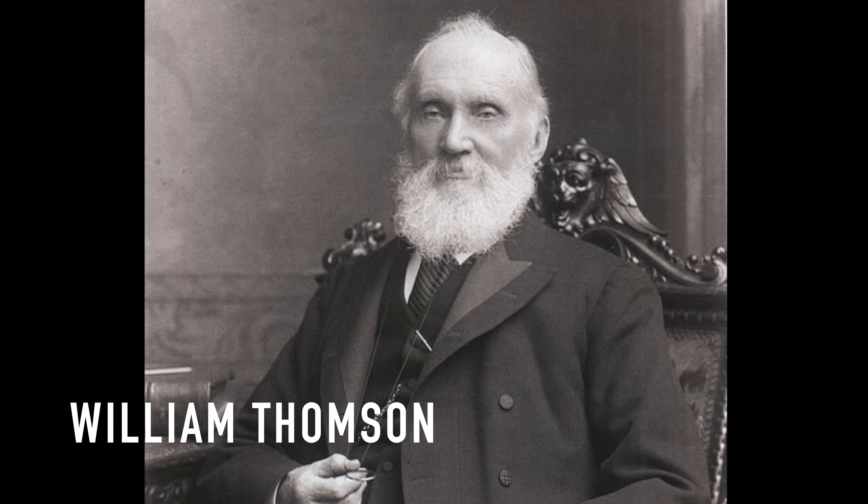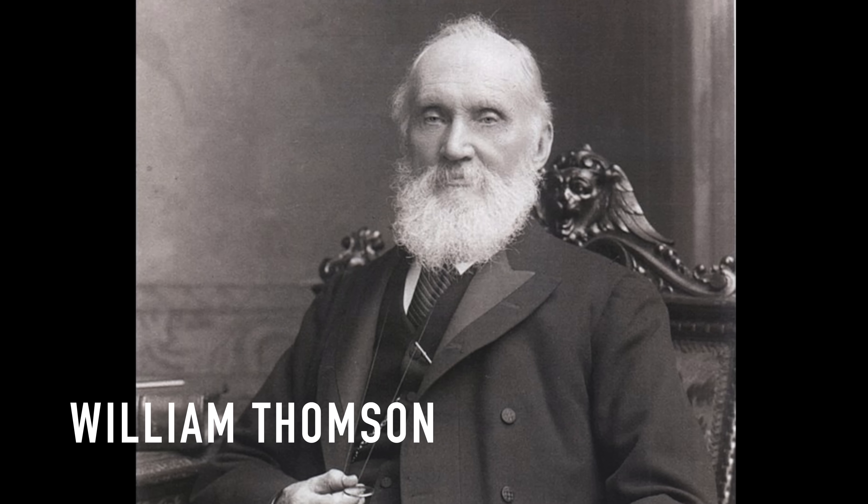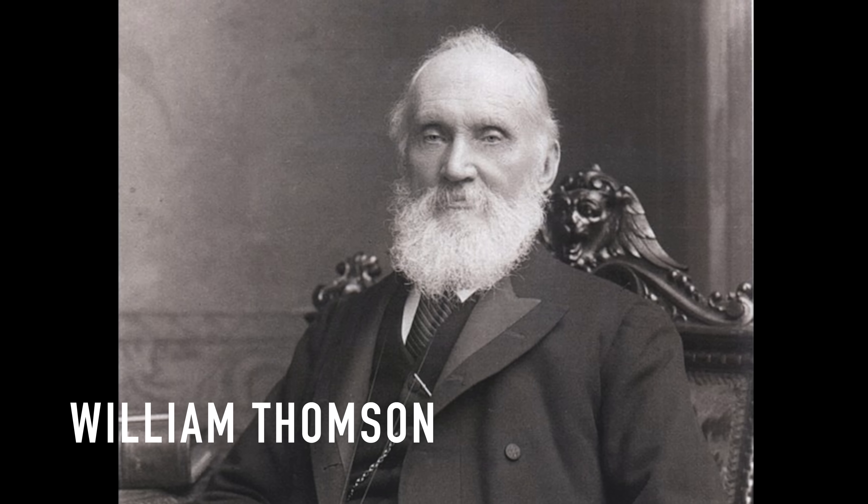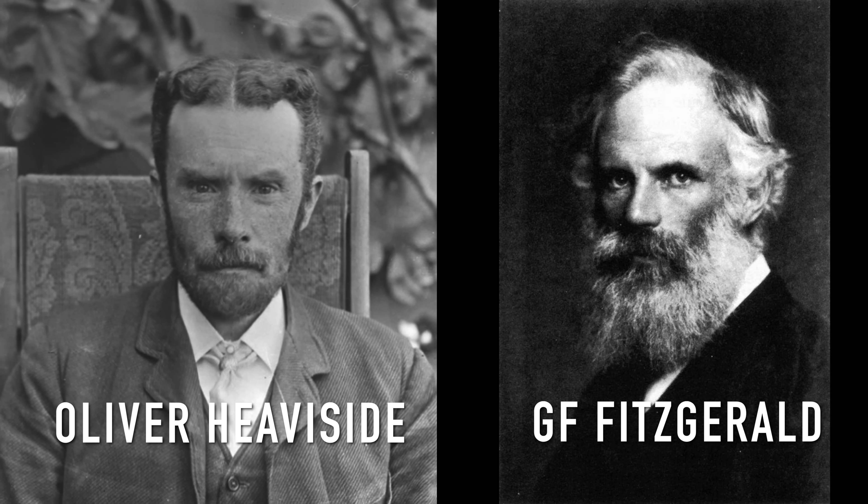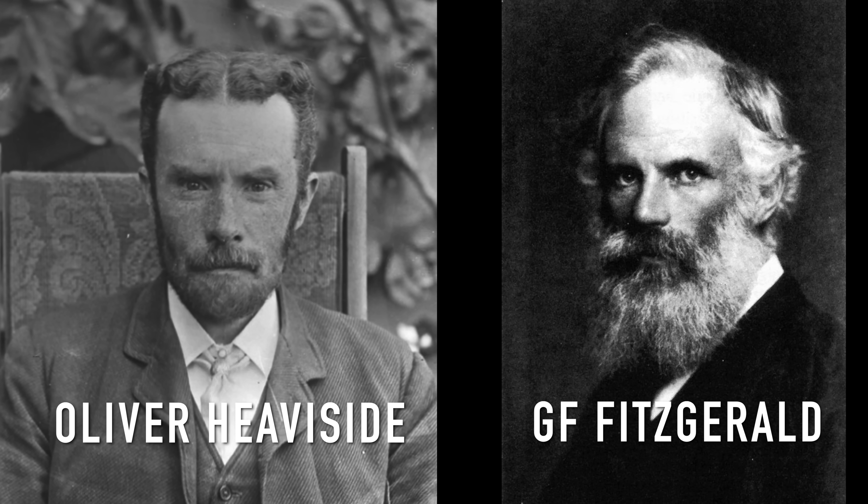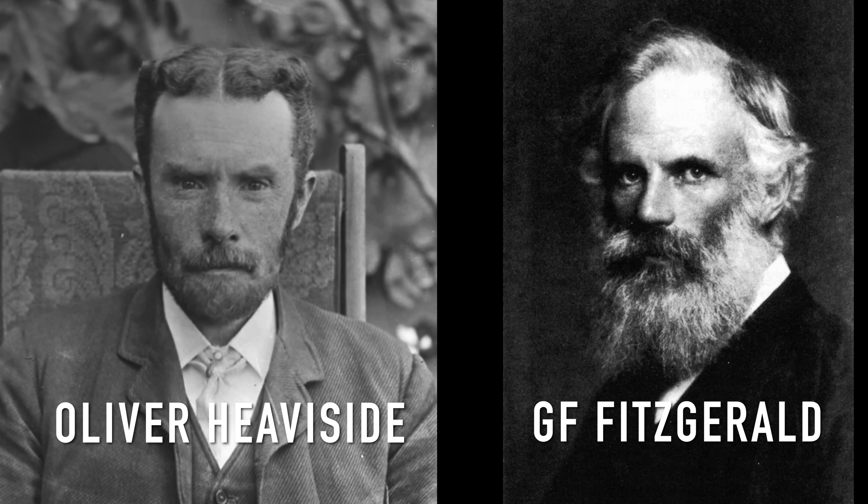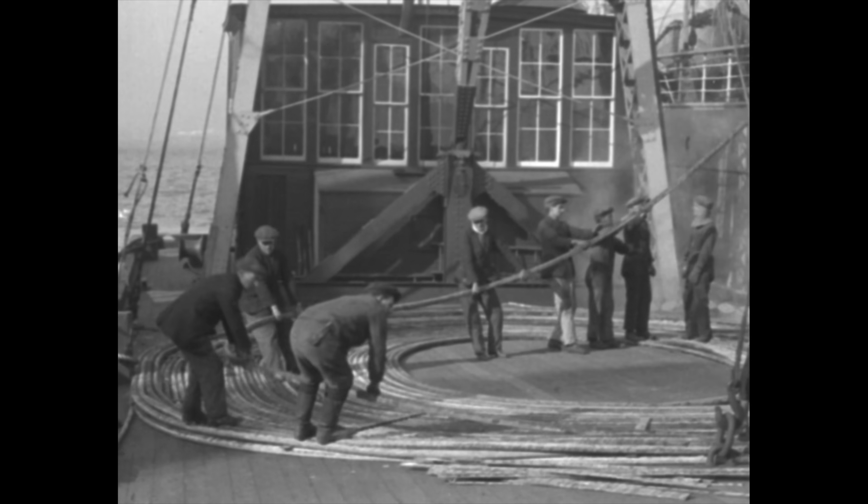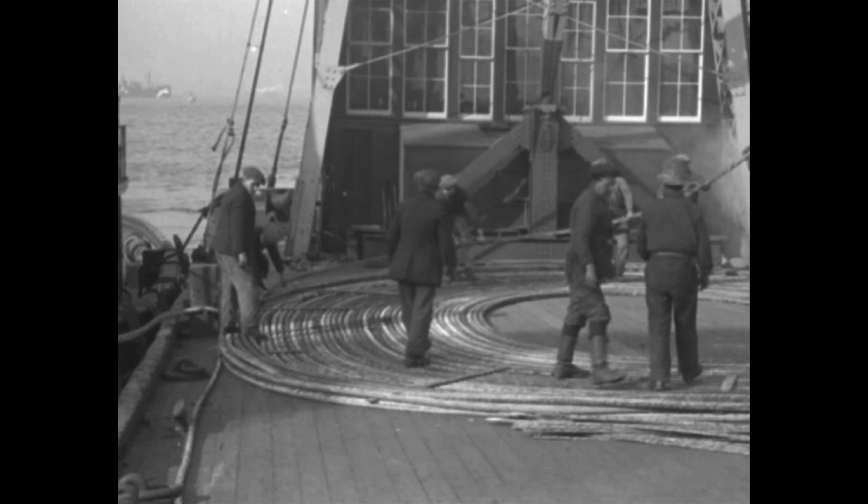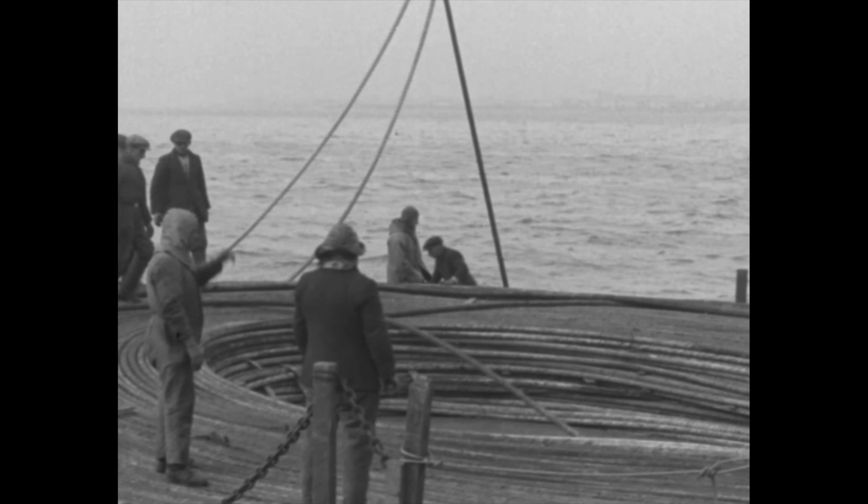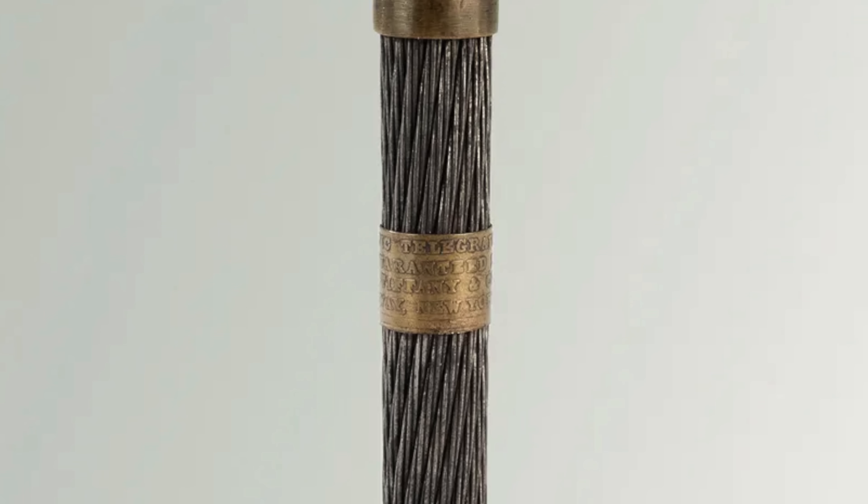William Thompson, the future Lord Kelvin, thought electrical signals moved through submarine cables like water flowing through a rubber tube. But others like Heaviside and Fitzgerald argued it was the fields around the wires that carried the energy and information. And ultimately this view proved correct. To insulate and protect the submarine cable, the central copper conductor had been coated in an insulator and then encased in an iron sheath.